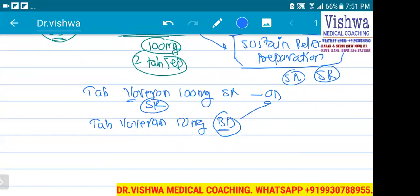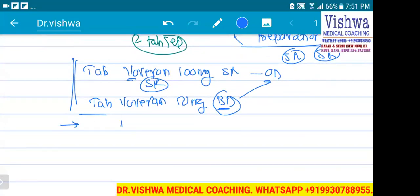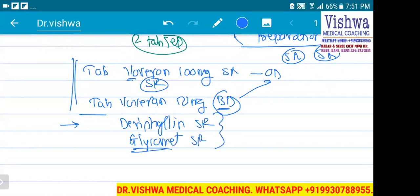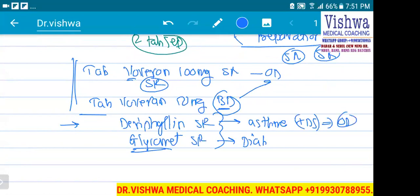By converting to SR, have we reduced or increased the half-life? No — we cannot change the half-life. We can only control the absorption. There are many drugs you must have seen, like Deriphylline and Glycomet SR. Deriphylline is used for asthma and was originally taken thrice in a day — converted to once in a day. Glycomet SR is used for diabetes and was also thrice in a day, converted to once in a day. The SR form makes it easier for patients to remember and is more comfortable for the patient.